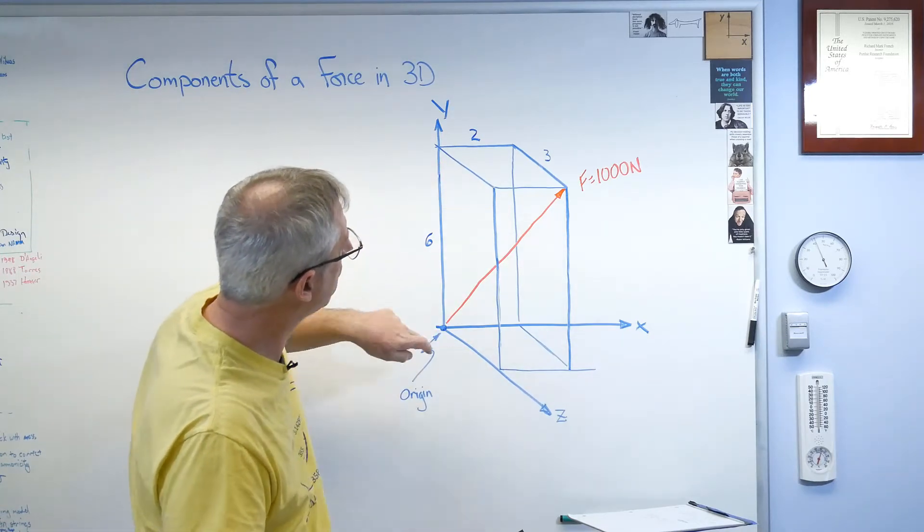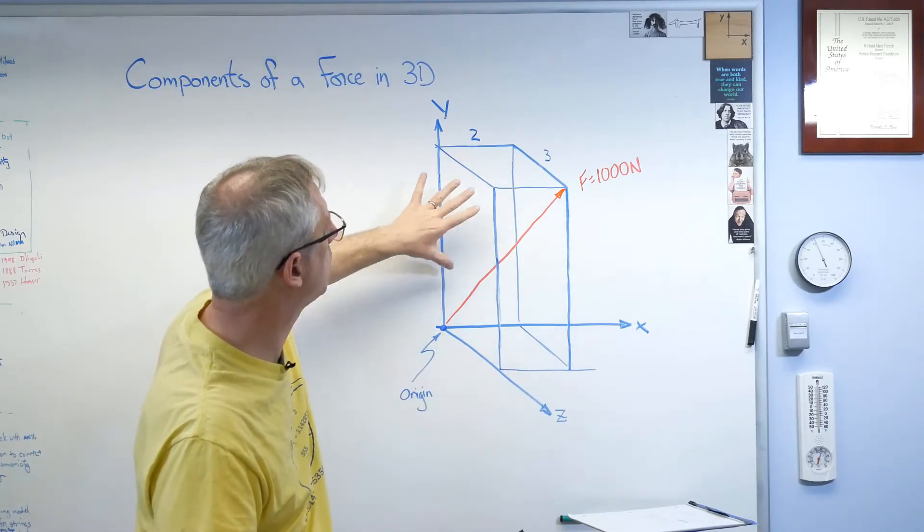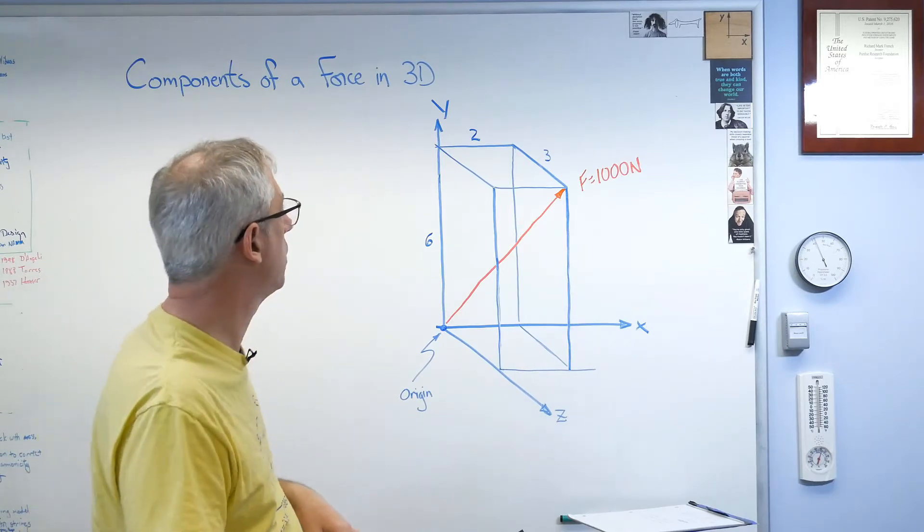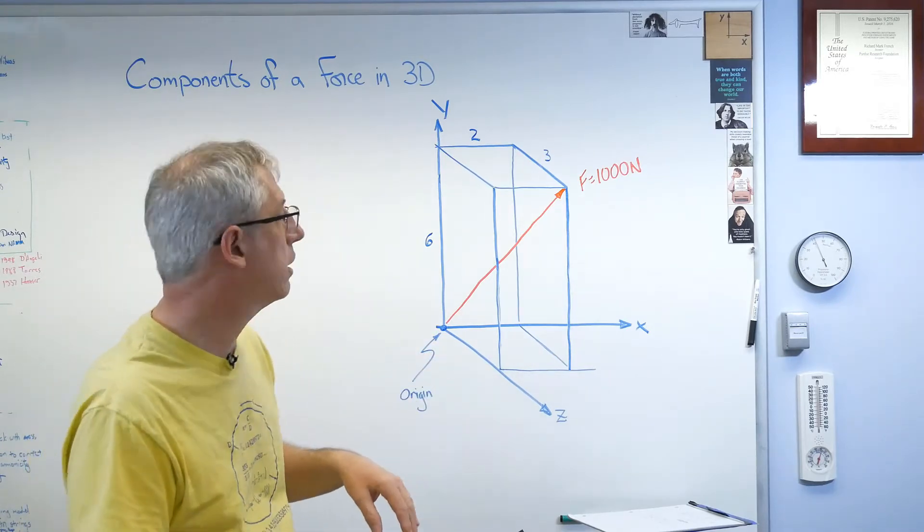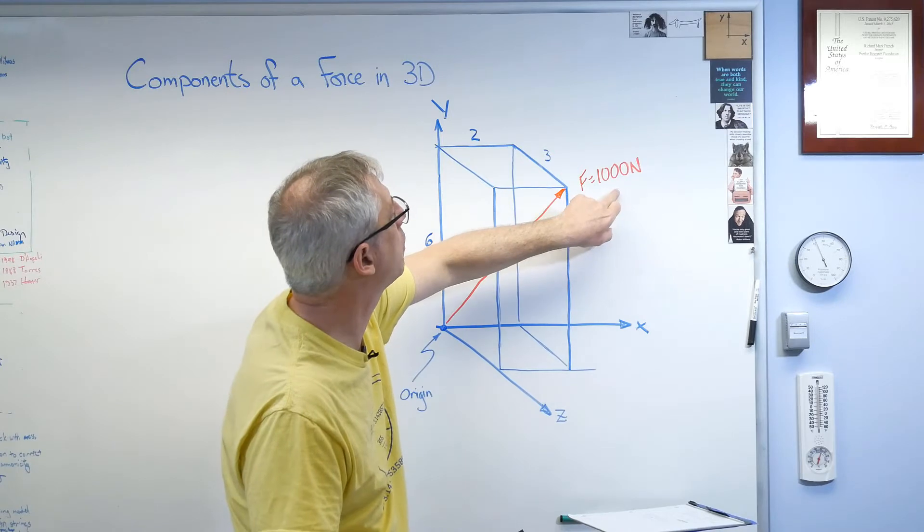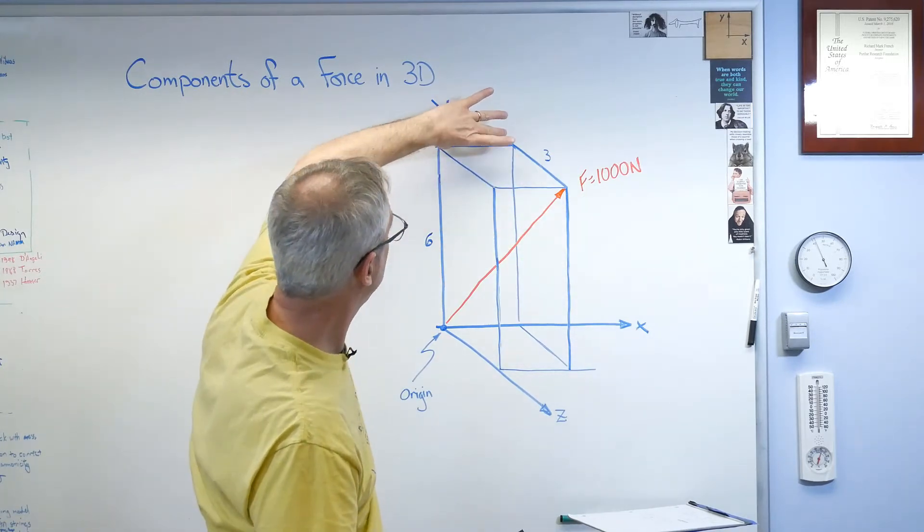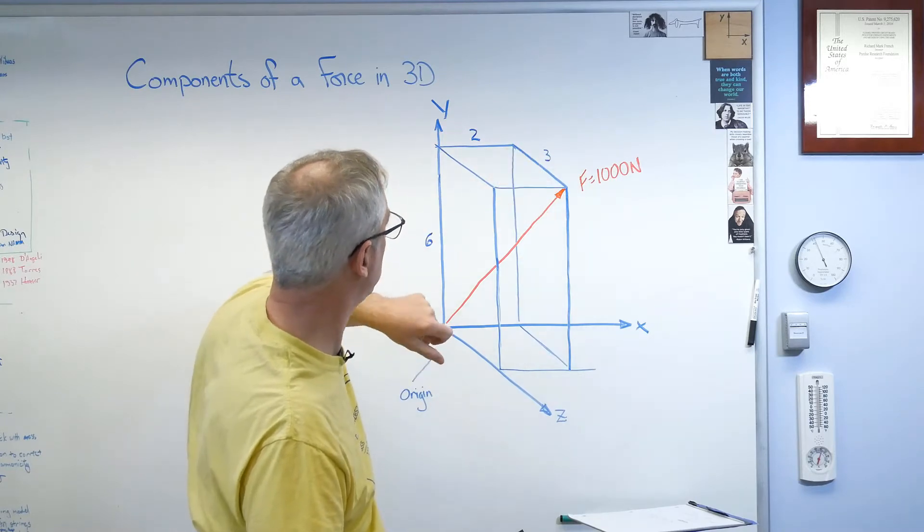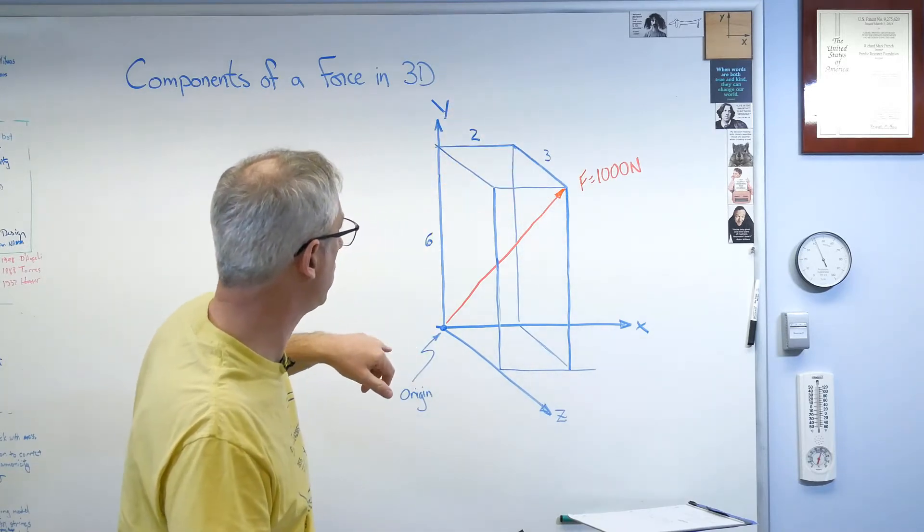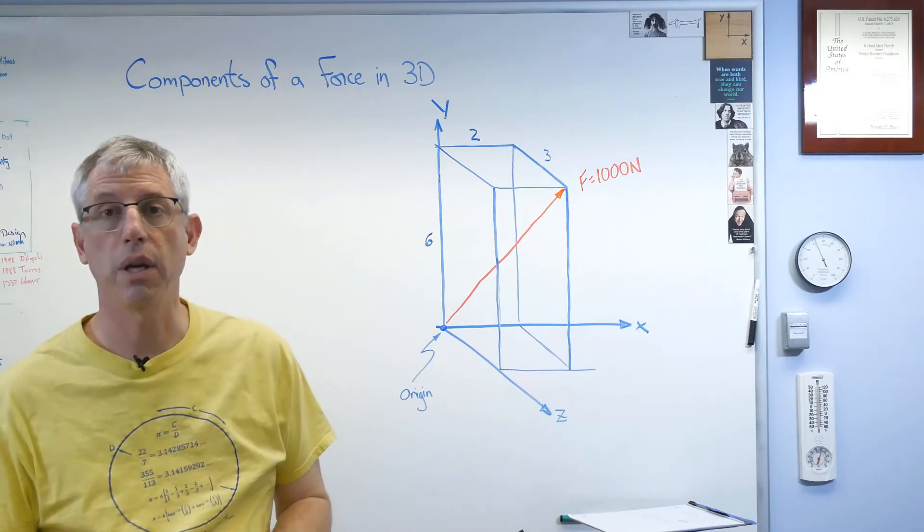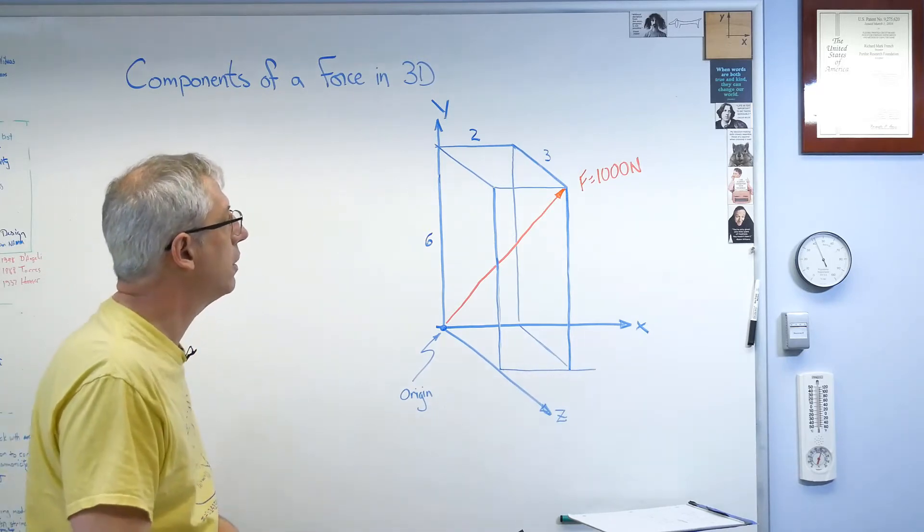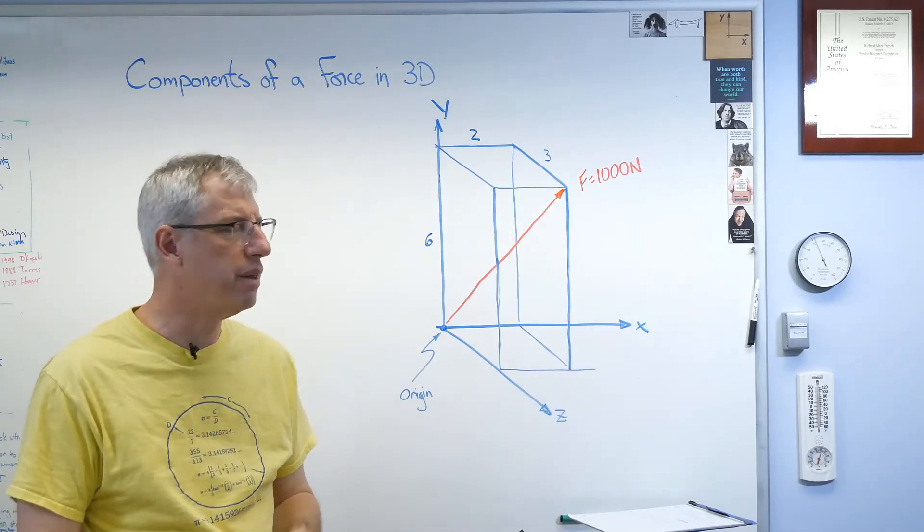Now I drew this box, and I gave it some dimensions here, or some relative sizes. They're not actually dimensions, because I've got the force equal to a thousand newtons, and I've got two units this way, three units in the x direction, I should say, three units in the z direction, and six in the y direction. So how do we deal with this?